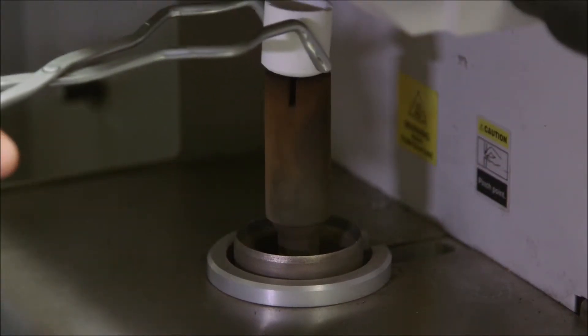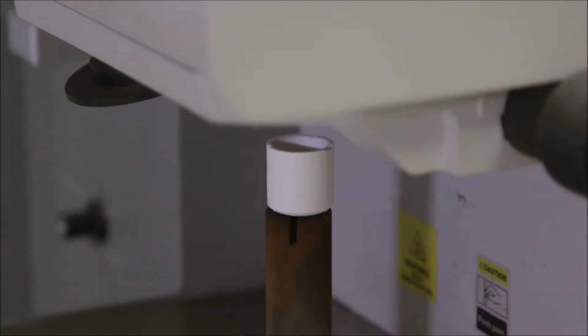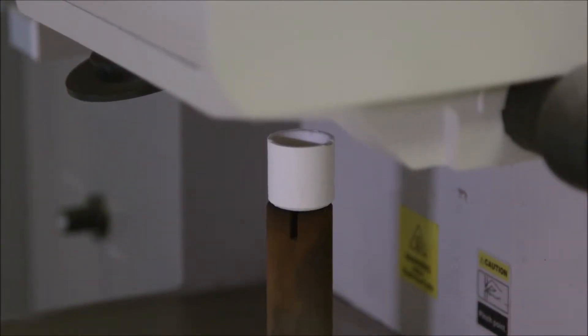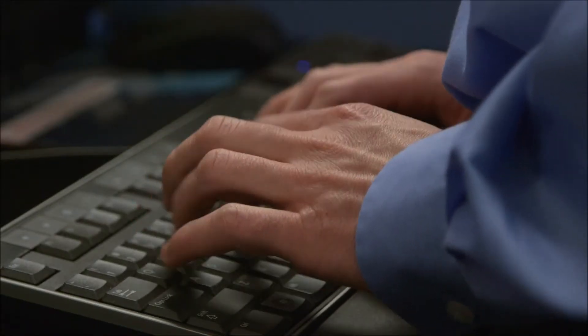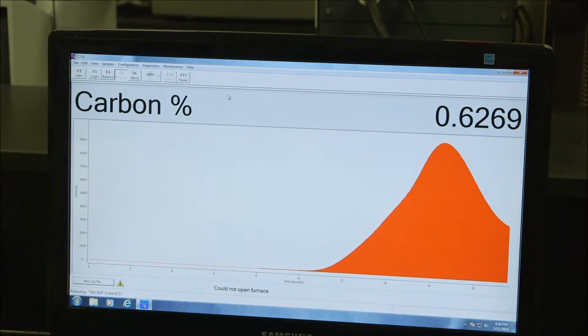Our spectrometer doesn't have the capability of getting down to the precision on these certain elements, so these two tools are used for identifying with very high precision what the amount of carbon is within a material or what our nitrogen is within our material.